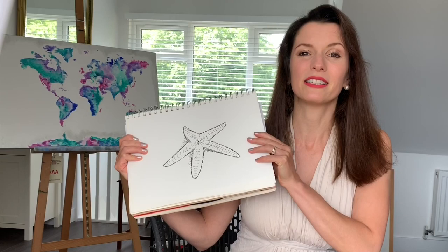One of them being the starfish, so this is what we're going to be drawing today. Super simple. All that you need is some plain white paper, a pencil, an eraser, and a black pen. That's it.